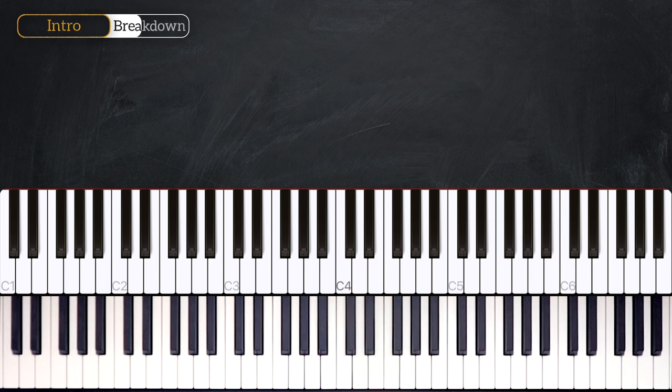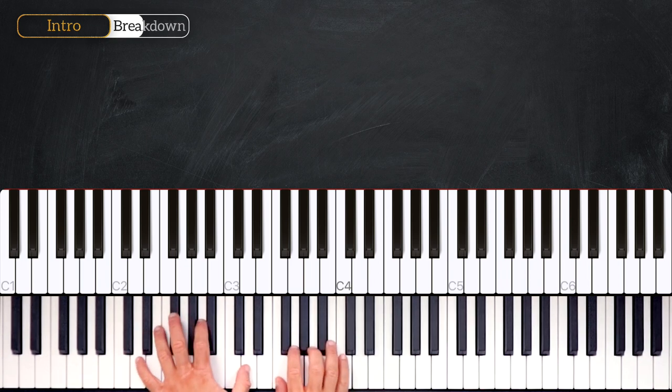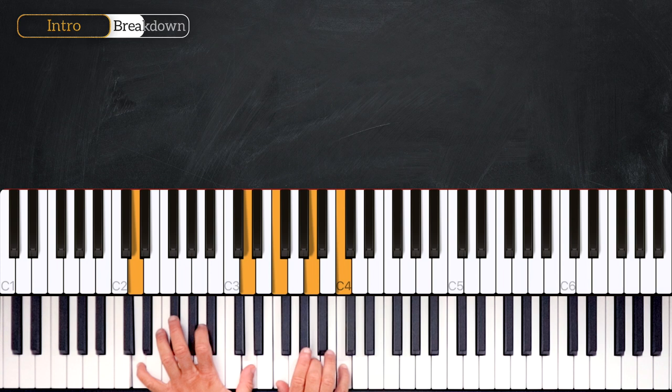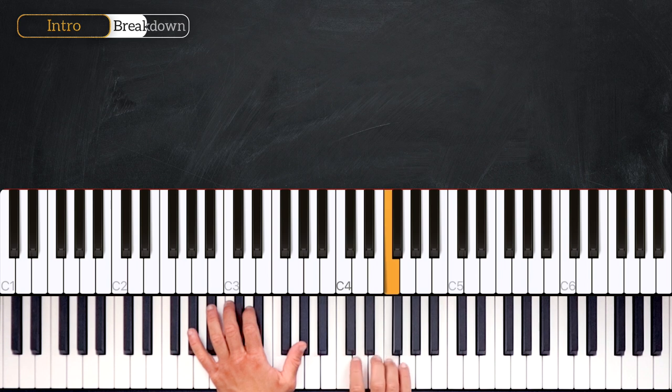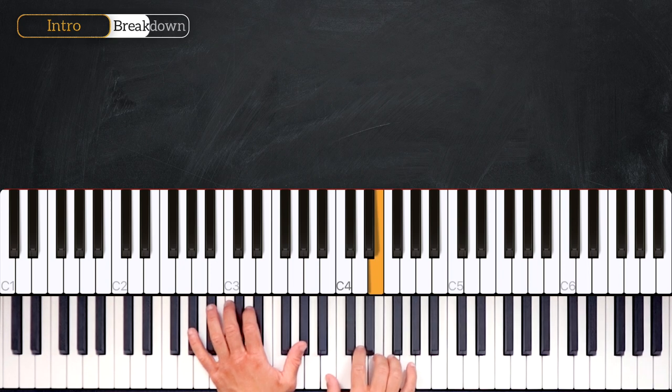Now let's break down the introduction. So we start by playing the D minor 7, like this, and we'll play this melody on the right hand. So here we play a quick F into G, then F, E into the G sharp diminished.